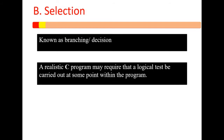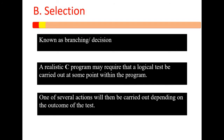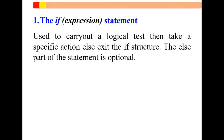Selection is also referred to as branching or the decision structure. A realistic C program may require that a logical test be carried out at some point within the program. One of several actions will then be carried out depending on the output of the test. Now let's begin by looking at the if statement. It is used to carry out a logical test then takes a specific action, else we exit the if structure if the condition is not met. The else part is optional.